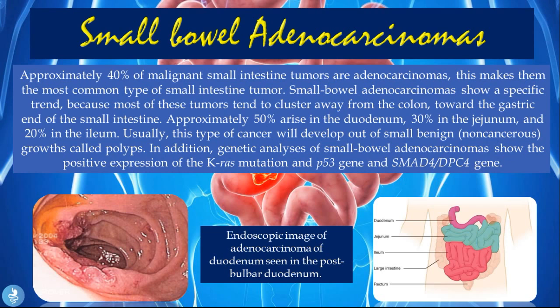This type of cancer usually develops out of small benign non-cancerous growths called polyps. Genetic analysis of small bowel adenocarcinomas shows positive expression of the KRAS mutation, the p53 gene, and the SMAD4/DPC4 gene. This endoscopic image shows an adenocarcinoma in the duodenum — they tend to cluster toward the gastric end, so most are found in the duodenum and jejunum, with fewer in the ileum. This is the most common small bowel malignancy.